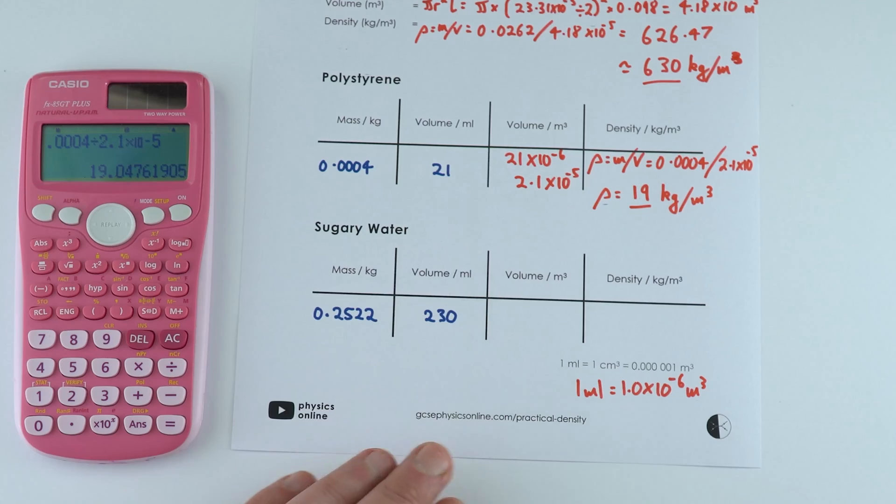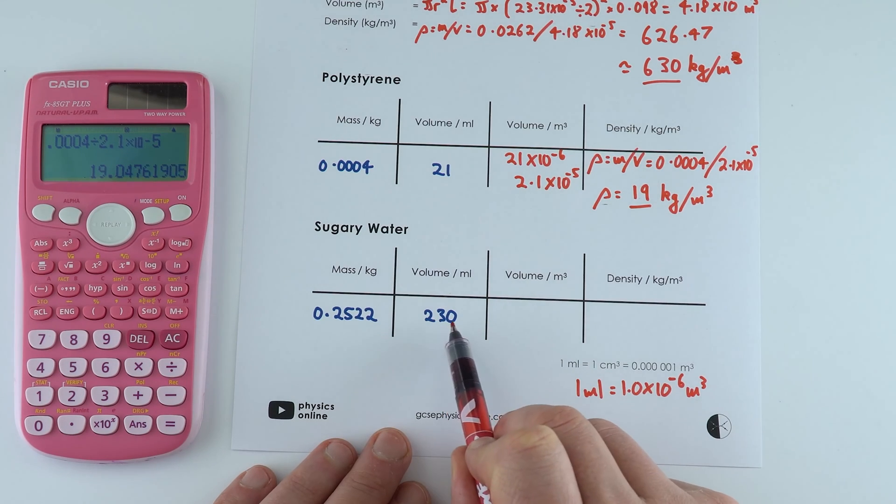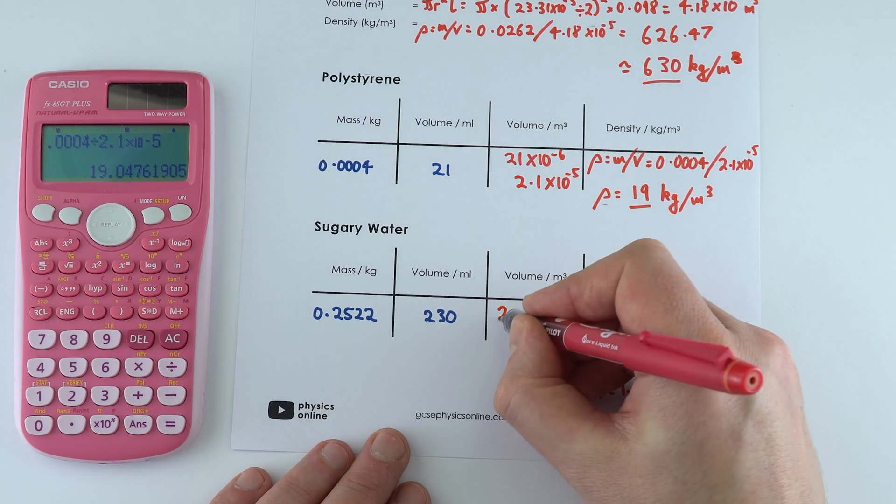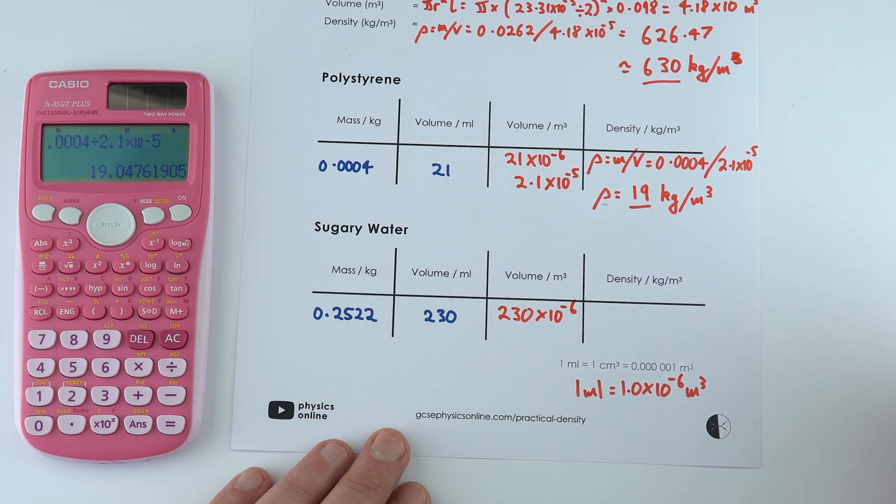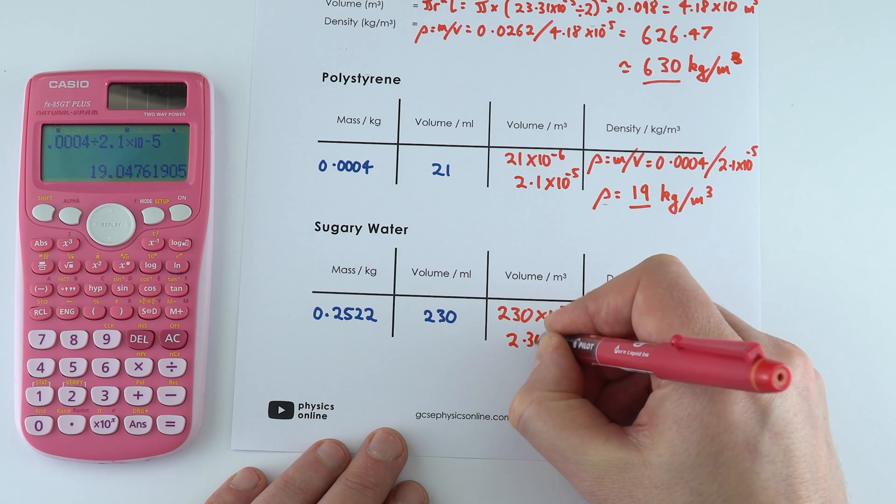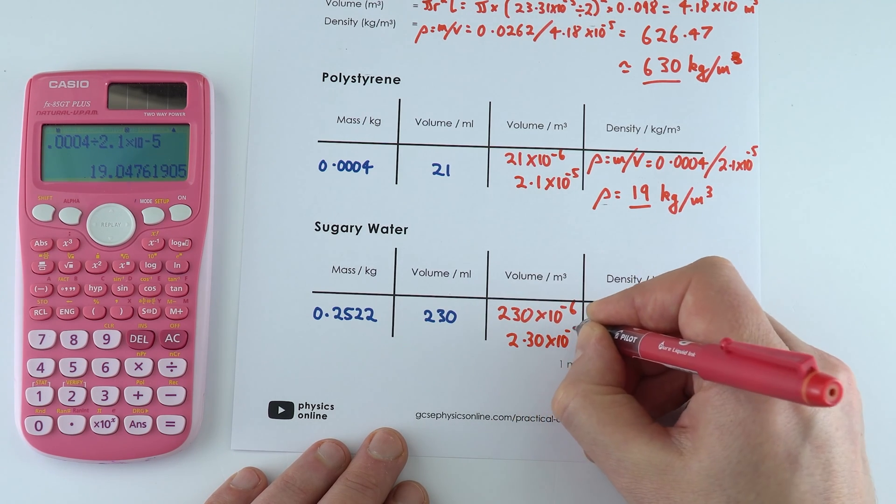And finally we've got the sugary water. Again the volume is 230 milliliters, that's 230 times 10 to the minus 6 cubic meters which is 2.30 times 10 to the minus 4.